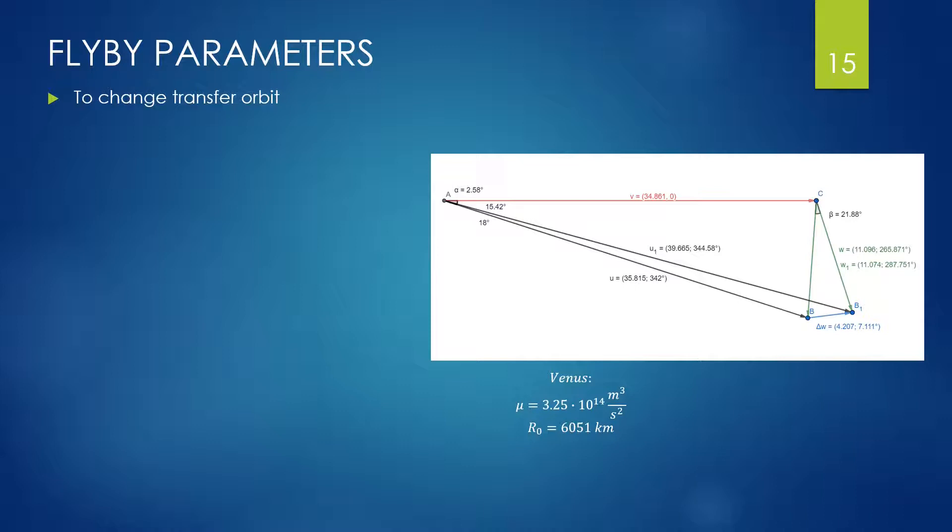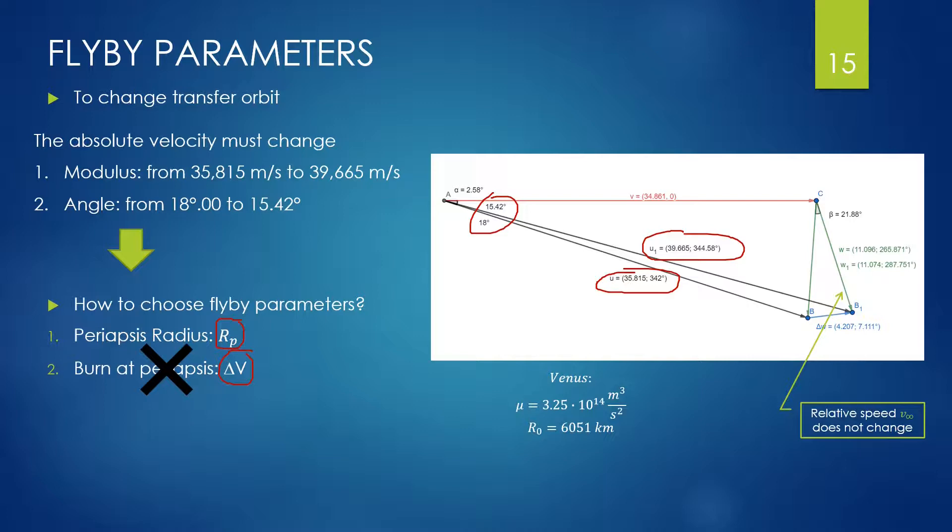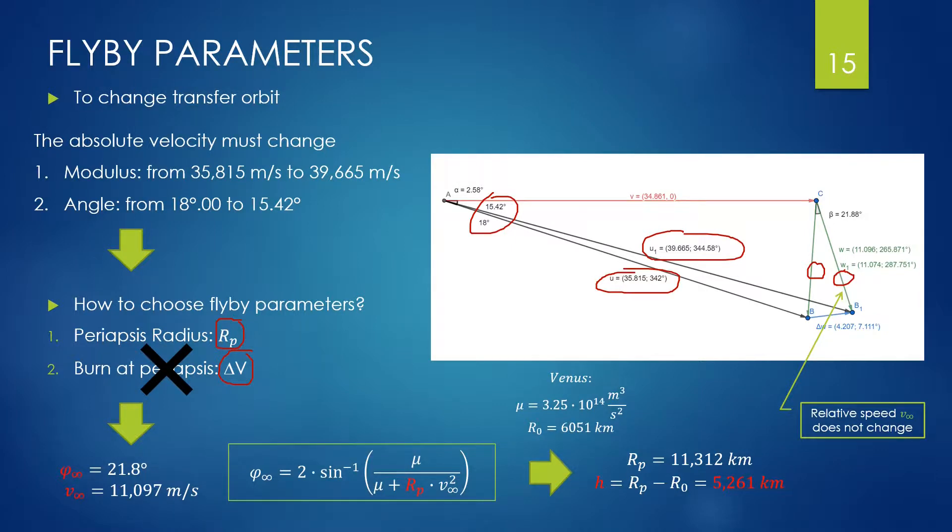We represent here in this vector chart the velocities found. V in red is the velocity of Venus around the Sun, the draft speed. U is the absolute entry speed, U1 the leaving absolute speed. Also the angles are known. How to choose the flyby parameters? The periapsis radius RP and the speed change at periapsis delta V. Actually, this second parameter is not needed because the two relative speeds are practically the same. The phi infinite we can determine graphically is the angle beta, 21.8 degrees. V infinite we calculated before. Therefore, by inverting this formula, we can find the value of RP. Subtracting the radius of the planet, we get the elevation 5261 kilometers.